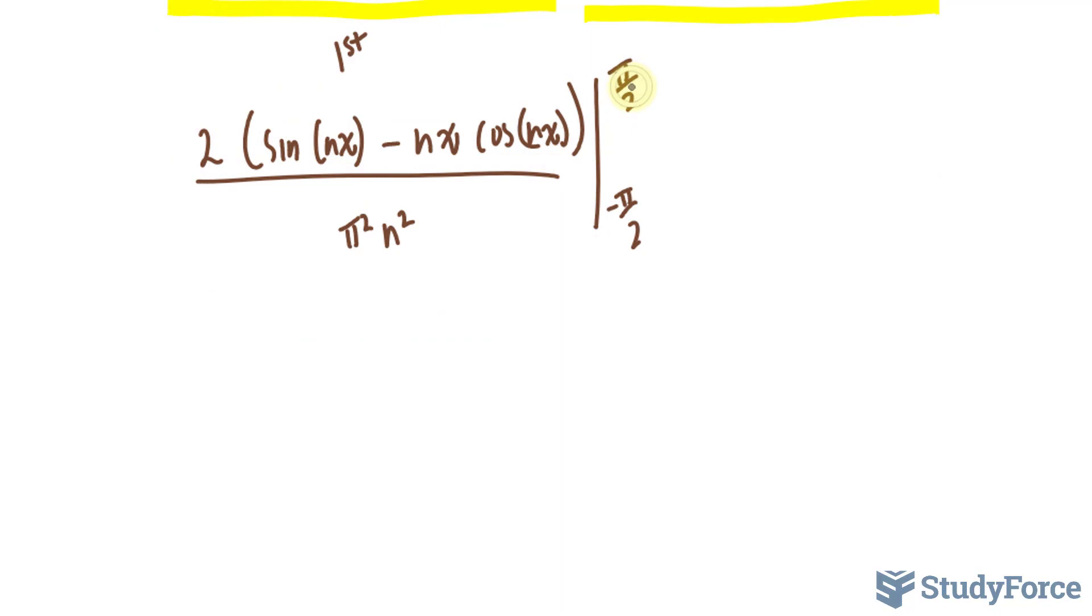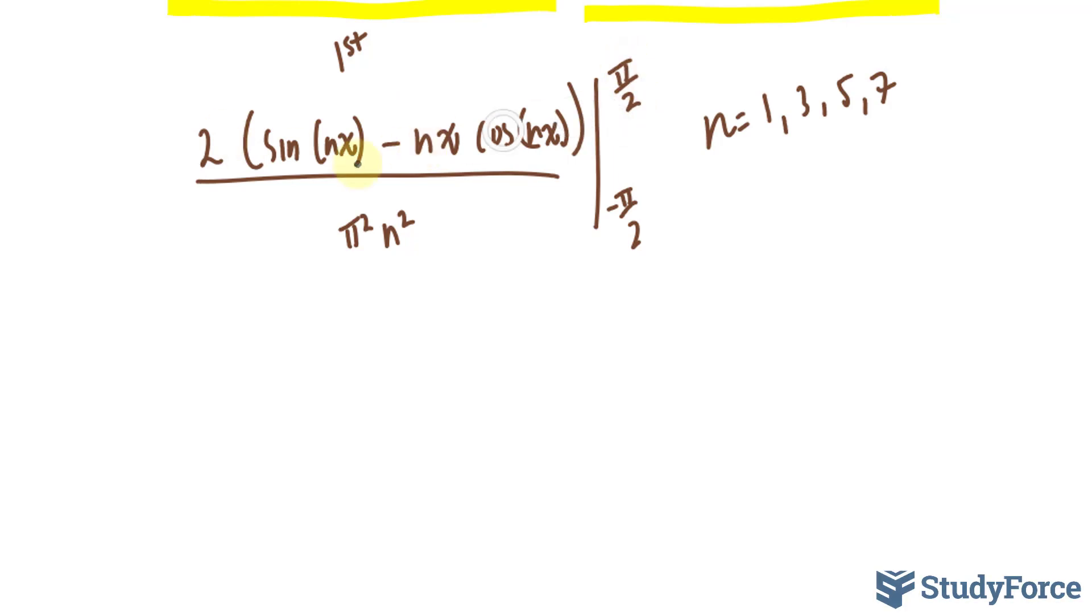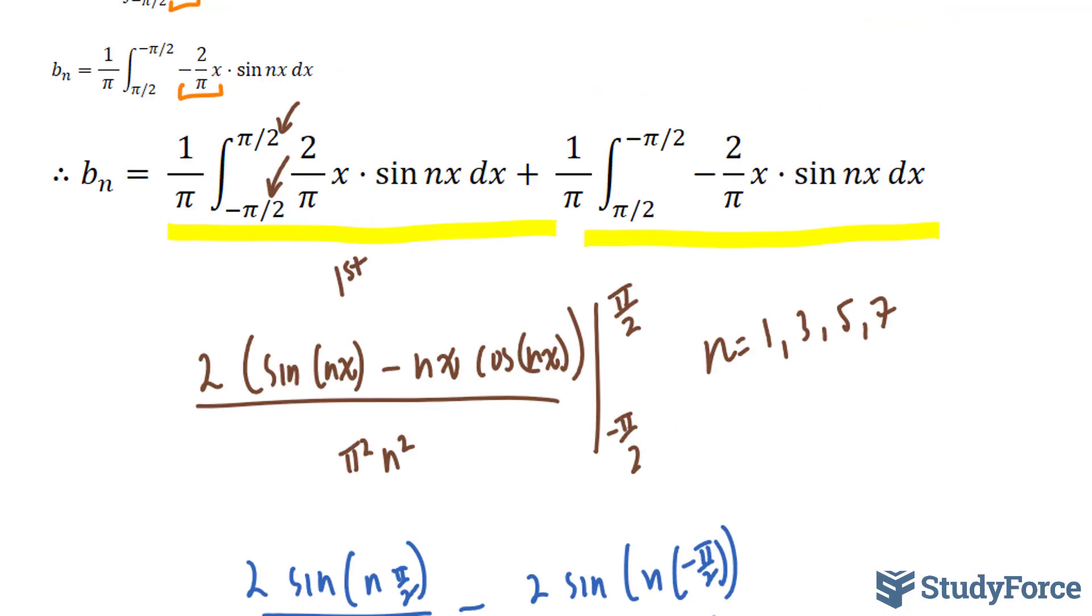Let's start by substituting the upper bound into our equation. If I substitute π/2, interestingly, into cosine, when n equals 1, 3, 5, and any odd number, cosine goes to 0. So we don't have to worry about this term in the numerator. Let's only substitute π/2 into sine. We have 2·sin(nπ/2) / (π²n²). Now we evaluate it at the lower bound, and you should end up with -2·sin(n(-π/2)) / (π²n²). That's the integral for the first part.